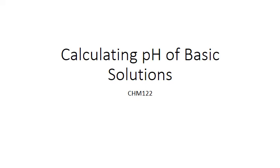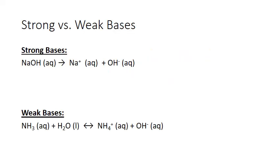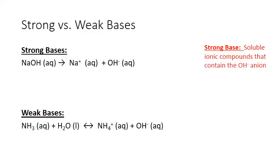In this PowerPoint, we'll discuss how to calculate the pH of basic solutions. Remember that bases produce hydroxide ion in solution, and they do this in one of two ways. Strong ionic bases contain hydroxide as part of their formula, like the sodium hydroxide in the example here. When these soluble compounds dissolve in water, they actually produce hydroxide as a free-floating ion.